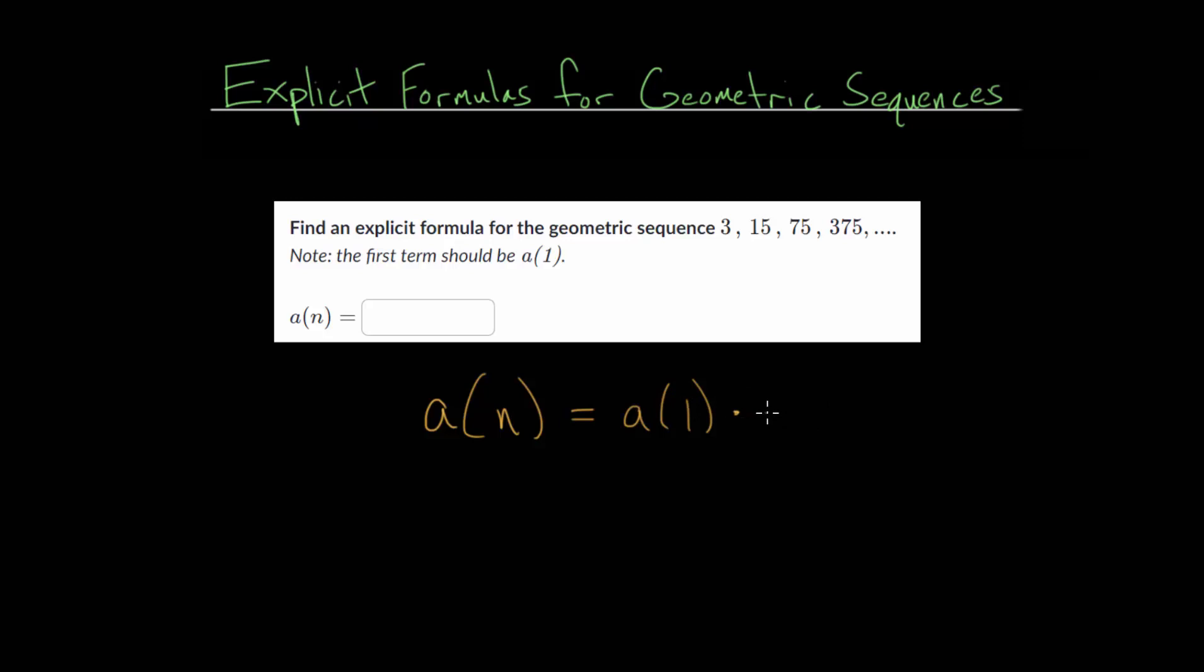And then we're going to multiply by the common ratio, which we'll call r, multiple times. Specifically, we'll multiply this common ratio n minus 1 times. So remember that r is just our common ratio. That's the number that we multiply by to go from one term to the next.